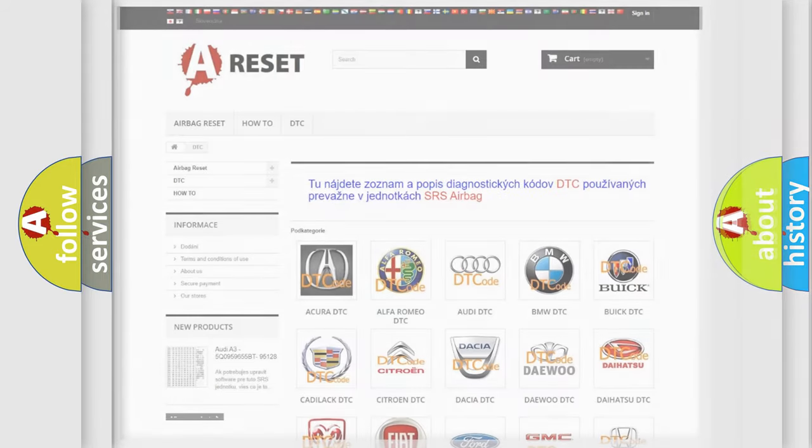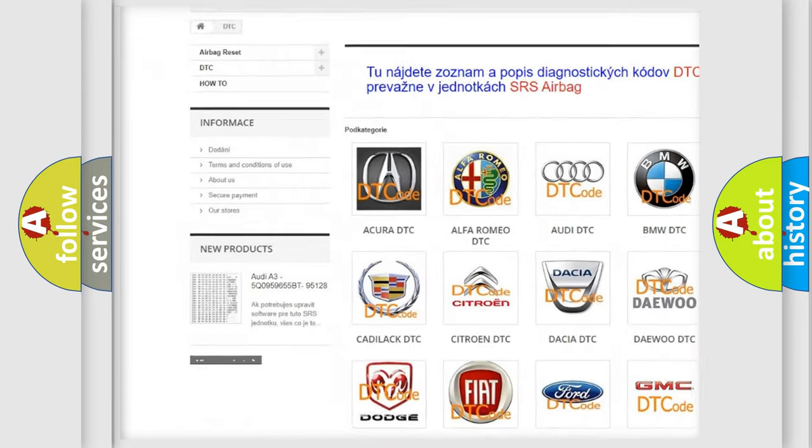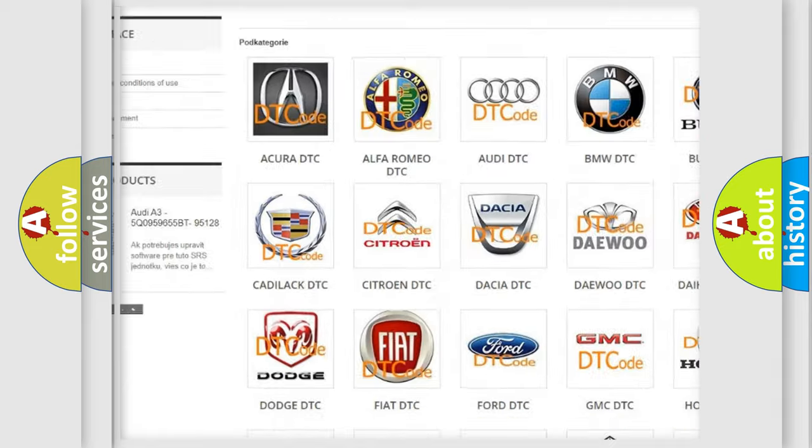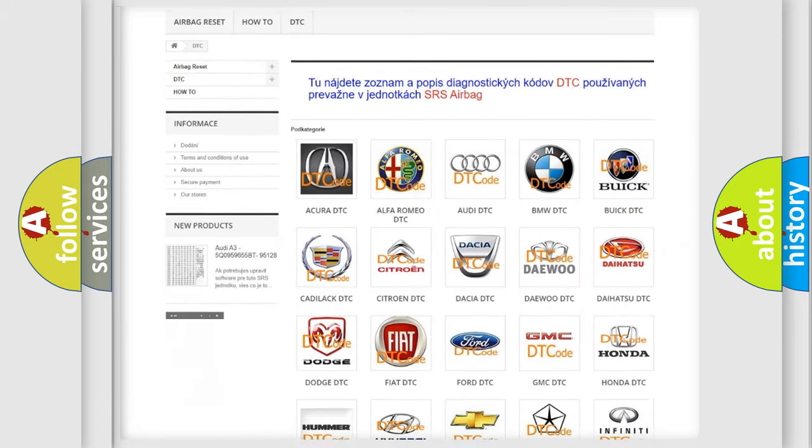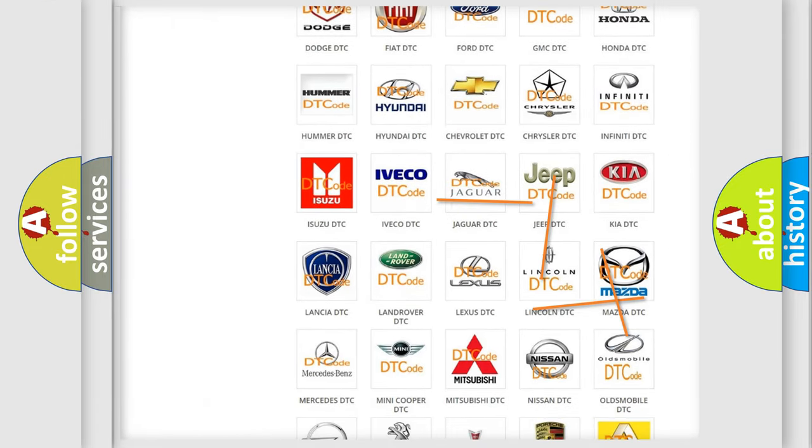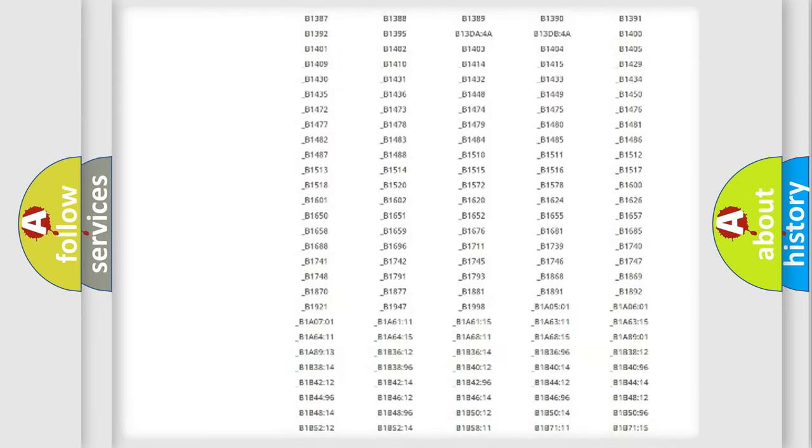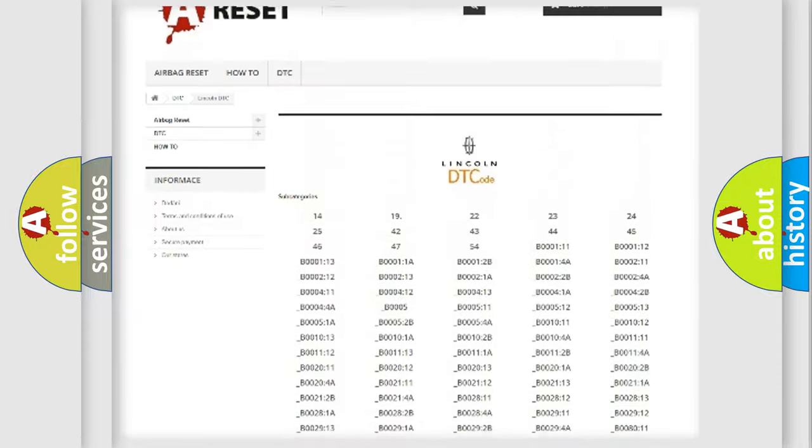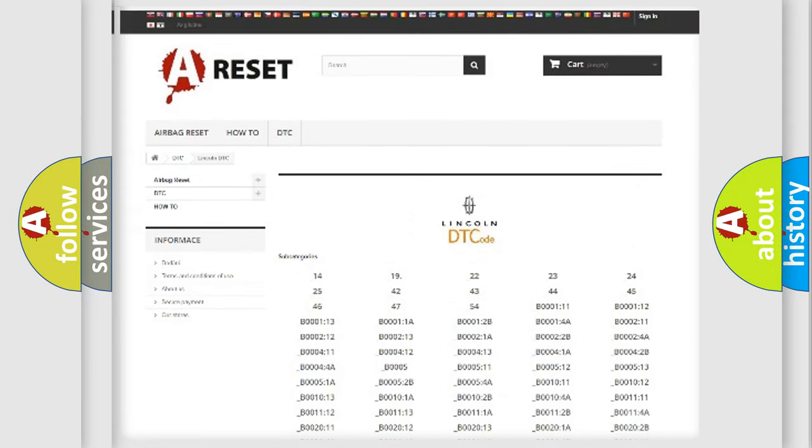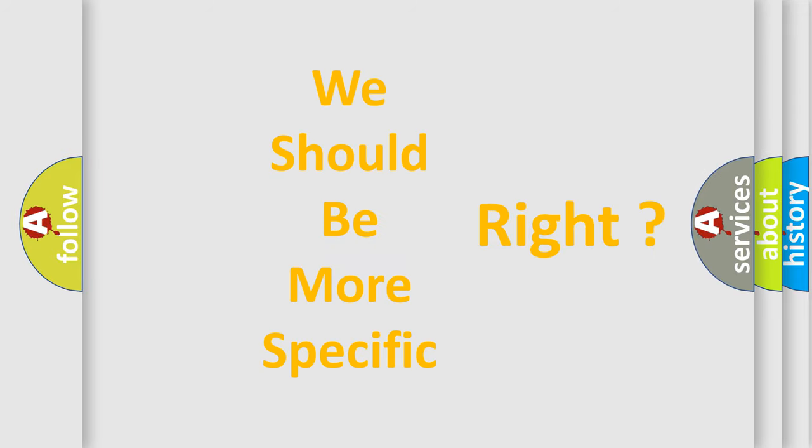Our website airbagreset.sk produces useful videos for you. You do not have to go through the OBD2 protocol anymore to know how to troubleshoot any car breakdown. You will find all the diagnostic codes that can be diagnosed in a link and vehicles, and also many other useful things. The following demonstration will help you look into the world of software for car control units.